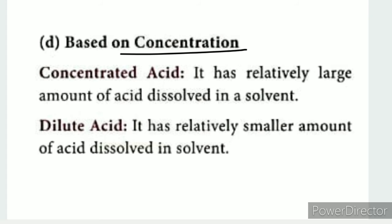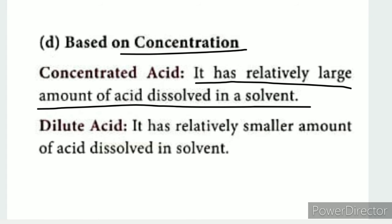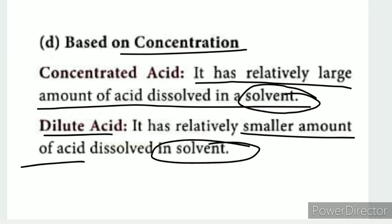Concentration refers to the amount of acid dissolved in a solvent. A concentrated acid has a large amount of acid dissolved in the solvent. A dilute acid has a smaller amount of acid in the solvent — more solvent, less acid. That is the difference between concentrated and dilute acid.